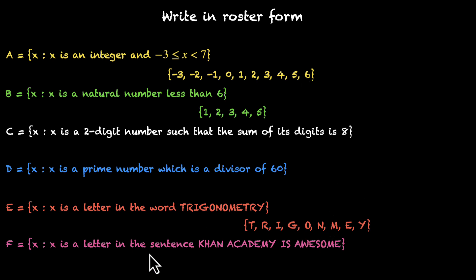We'll do the same thing in the next one. X is the letter in the sentence Khan Academy is awesome. So K, H, A, N, A is covered, C, A is covered, D, E, M, Y, I, S, A is covered, W, E is covered, S, and then O, and then M is covered, E is covered. Okay. This is what we have. Khan Academy is awesome.